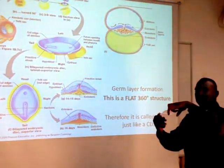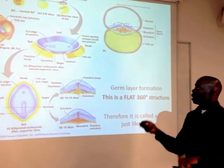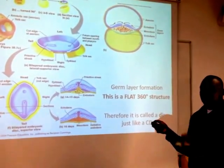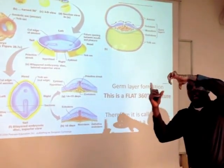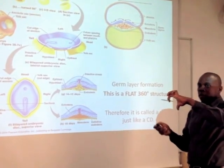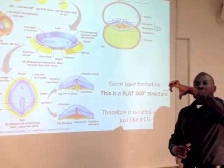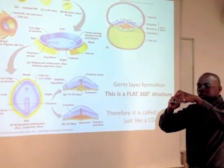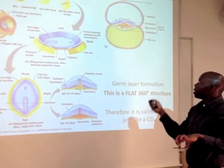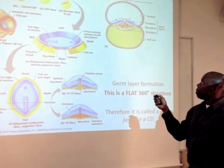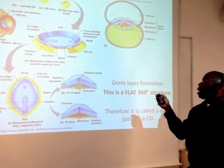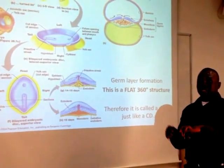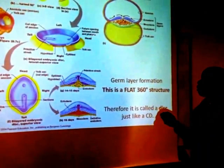The embryonic disc has two ends: a tail end and a head end. What then happens is you have this primitive streak forming. From the primitive streak, you have this one-layer disc — remember it's a 360-degree structure, all the way around. It's one layer, then forms three laminar layers. These cells filtrate down through the hole in the middle and filter out to form the next layers. So this layer becomes endoderm, this layer becomes mesoderm, and this layer becomes ectoderm. This is your three germ cell layer — the tri-laminar disc.